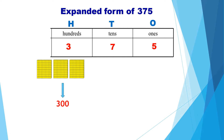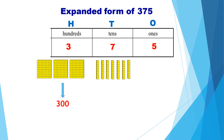Moving on to the tens place, we have seven tens. So we will take seven tens blocks — one, two, three, four, five, six, seven. Seven tens means the value is 70.